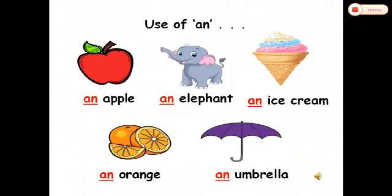Now let's discuss the use of 'an'. Children, we will use 'an' with words starting with a vowel letter. For example, in the first picture you see 'apple'. Apple starts with the letter A, which is a vowel, so we will use 'an' with it: an apple. In the second picture you can see 'elephant'. Elephant starts with the letter E, which is a vowel, so you will use 'an' with it: an elephant.